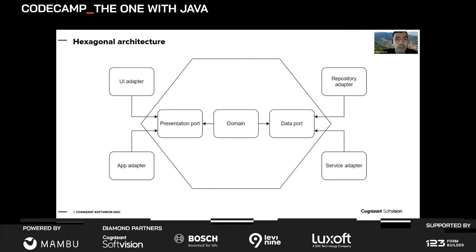Hexagonal architecture is also known as Ports and Adapters. It shifts the top-down approach of layered architecture to an inside-outside approach. That's why it's called hexagonal — the hexagon is a good shape to show you have something inside and something outside. The inside contains the domain: your domain objects, business logic use cases, and ports. The ports are used to communicate with the outside — you have a presentation port (an output port where you send data) and a data port (an input port where you get data).